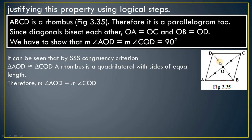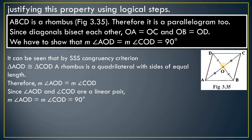Since the triangles are congruent, angles DOA and DOC are equal. These two angles together form a straight line, so they are supplementary — they add up to 180 degrees. Dividing 180 degrees into two equal parts gives 90 degrees each. Therefore the diagonals bisect each other perpendicularly, making a 90-degree angle.